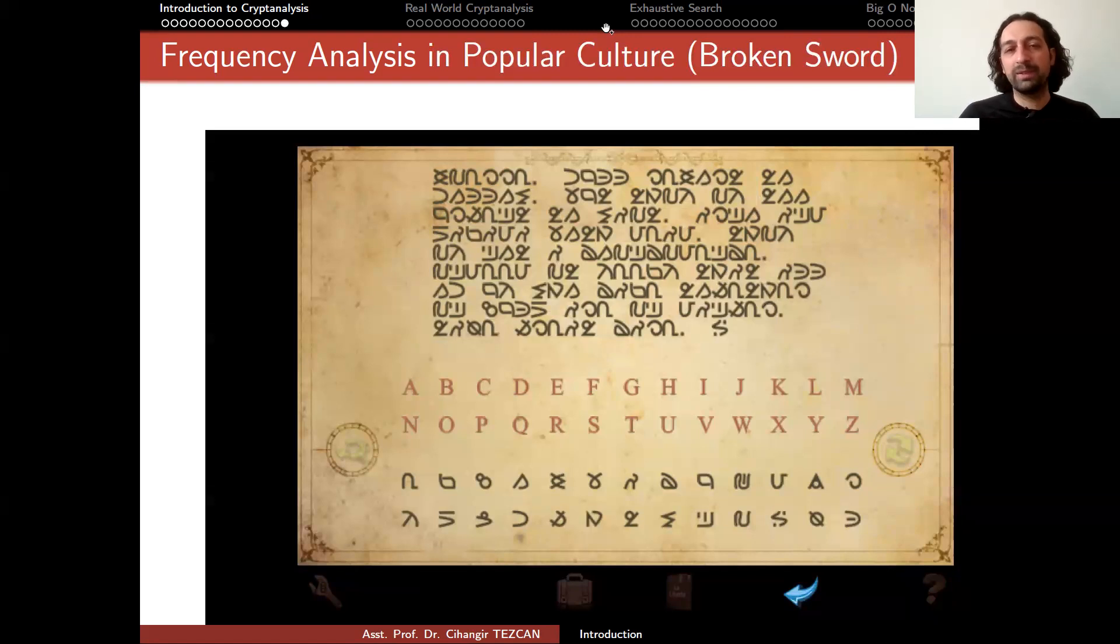But again, the idea that we use here is somewhat repeated in the modern cryptanalysis techniques where we try to find the statistical weakness in the cipher and then exploit it. So this will be all for pen and paper ciphers. Because next we will be talking about cipher machines like Enigma.